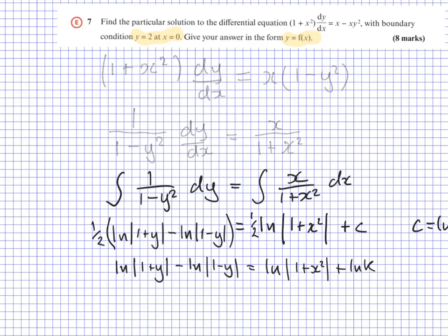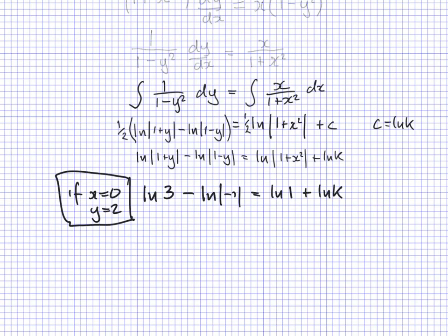Now we remember that our boundary conditions were given. If x equals 0, y equals 2, I'm going to substitute those in to calculate my value of k.